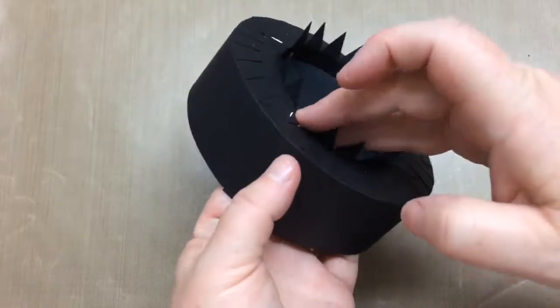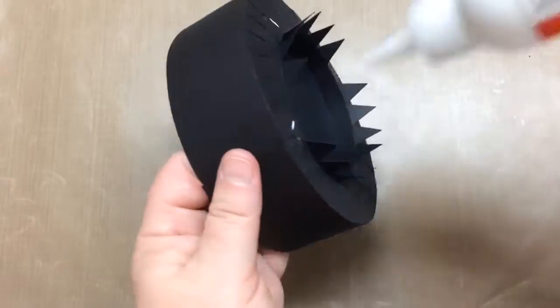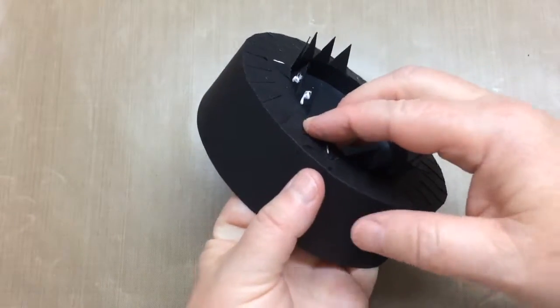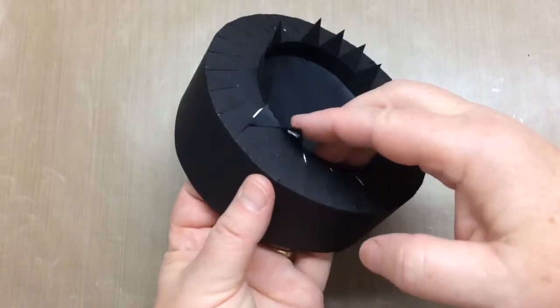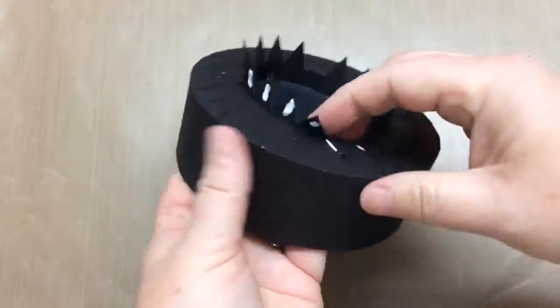So continue to glue on the tabs until everything's glued down. Don't worry about the mess, but try not to be as messy as I am with the glue, but it will be covered with the panel. So if you do get a little messy, don't worry about it.